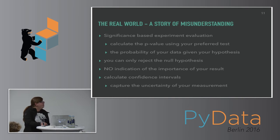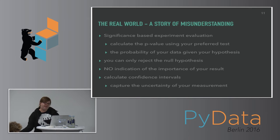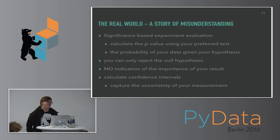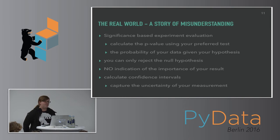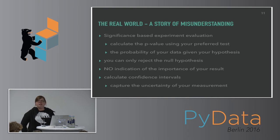However, in the real world with significance-based experiment evaluation, we calculate the p-value with our preferred statistical test. This is actually the probability of your data given your hypothesis — it is not the probability of your hypothesis given the data, because that's not what the p-value tells you. If you use a hypothesis-based testing approach to declare one winning variant, you can only reject the null hypothesis. Your null hypothesis will be that there is no difference between the two versions, although you're actually testing for the exact opposite. And there is no indication if your result is important — there are no 'highly significant' results when you just calculate the p-value.